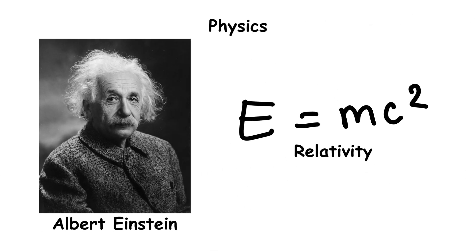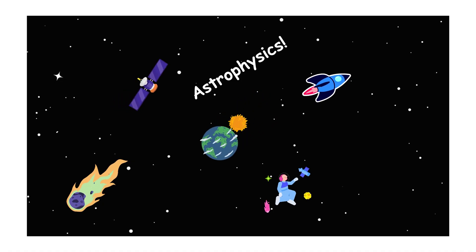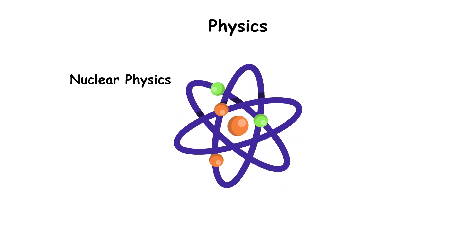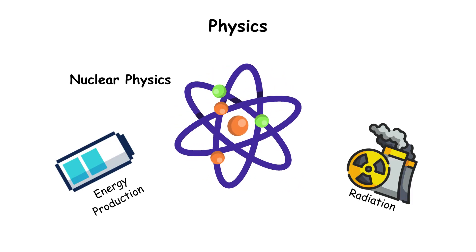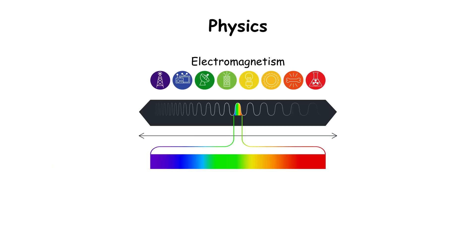Einstein's theory of relativity shook up how we think about time and space. Astrophysics applies all that to the stars, while nuclear physics examines the nucleus of atoms. Think energy production and radiation. And let's not forget electromagnetism, the science behind electricity, magnets, and light itself.